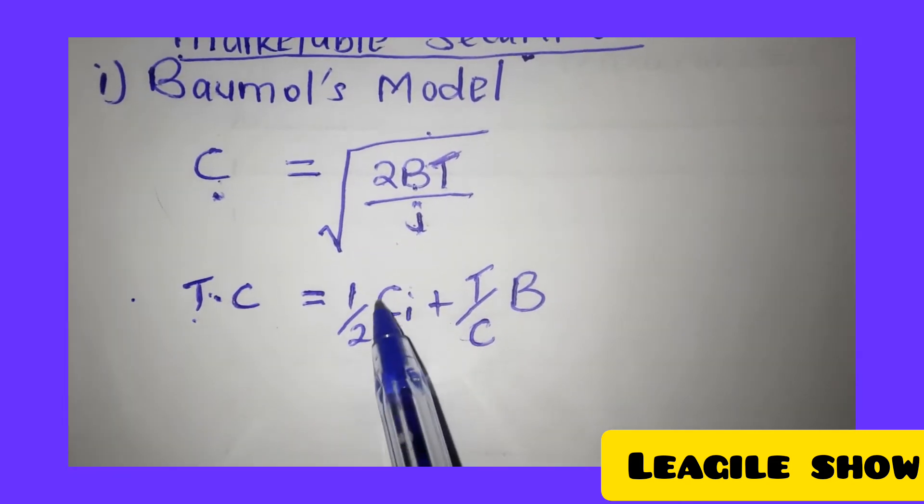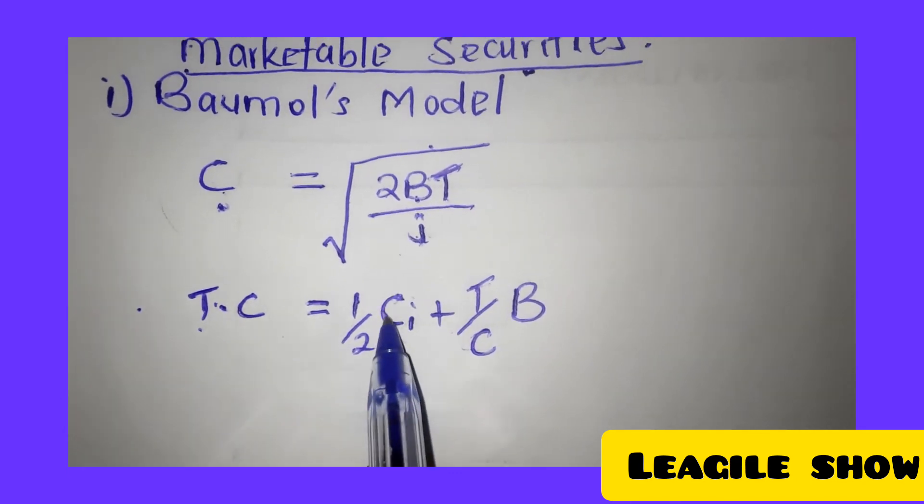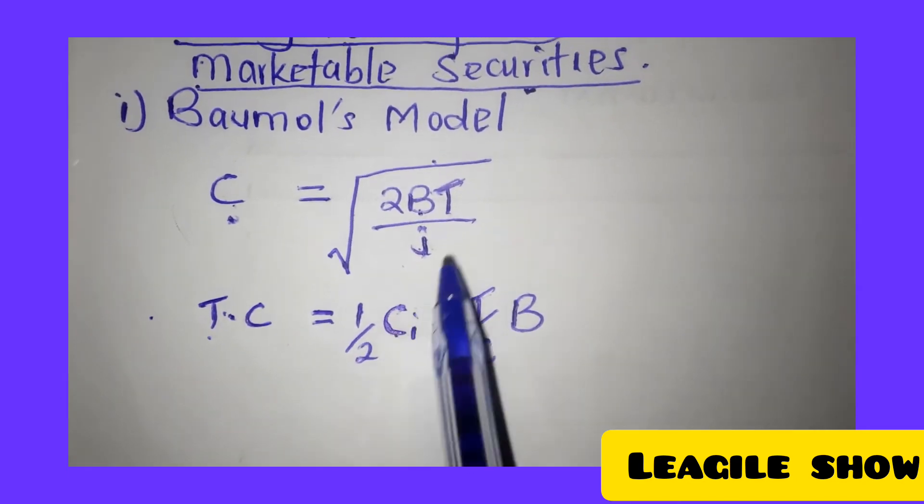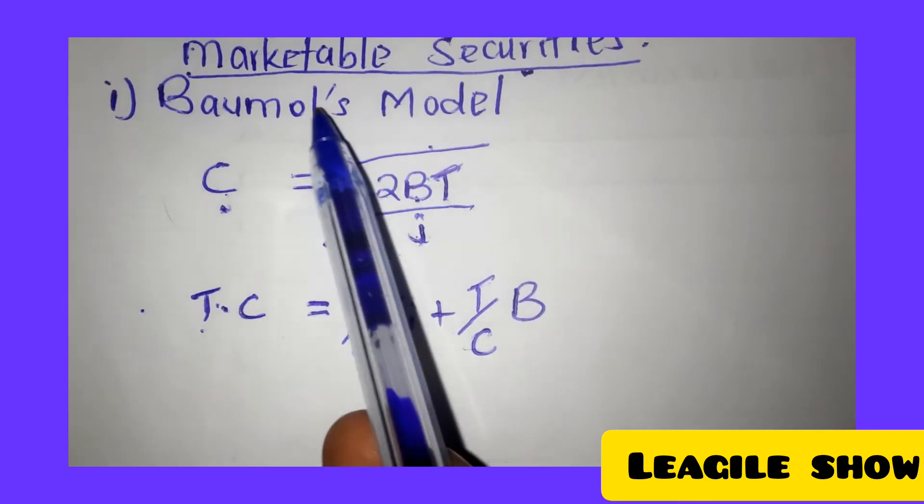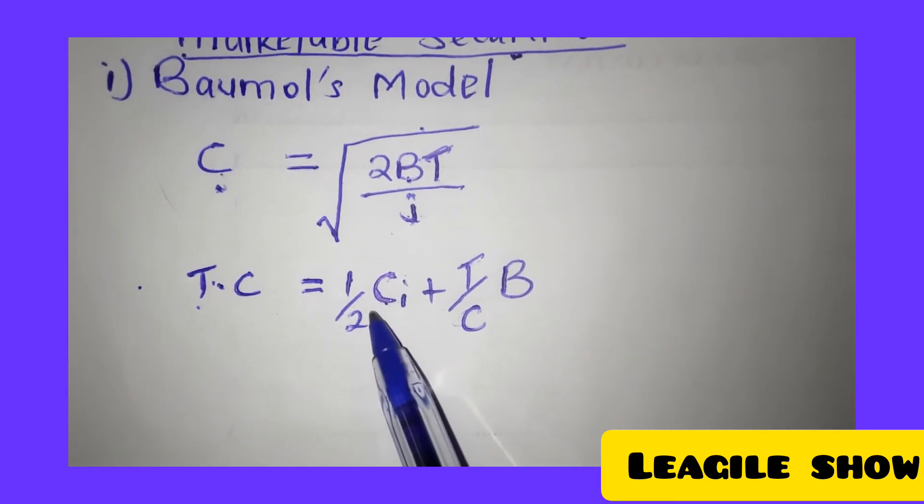That is C times i plus T over C times B. Remember the C in this case is the answer that you'll get from this first part of this calculation. C becomes the optimal cash to be raised.